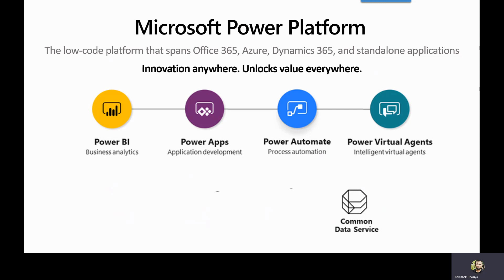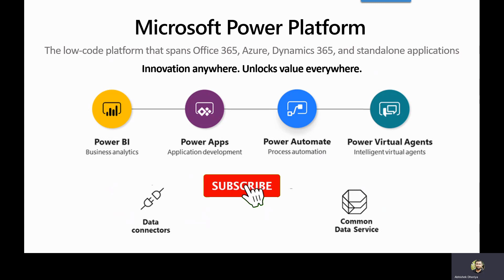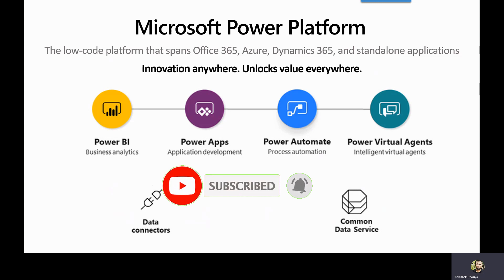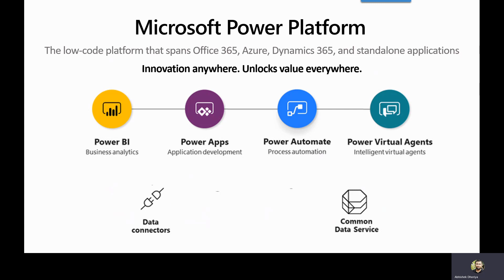Connecting to external systems from Power Platform is made possible through data connectors — Microsoft Power Platform connectors. There are more than 300 out-of-the-box default connectors available to connect to external services like YouTube, Facebook, MailChimp, and many more. If you cannot find the connector you need for a custom application, you can build your own custom data connectors that integrate easily with Power Platform for your custom scenarios.